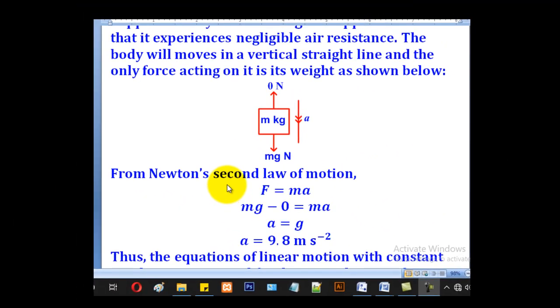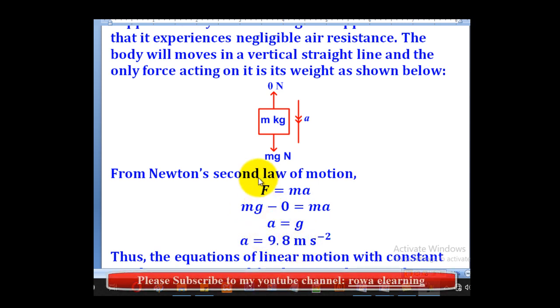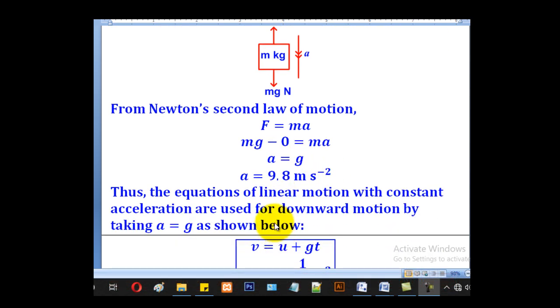From Newton's second law of motion, we know that F equals ma, where F is the resultant force in the direction of motion. In this case, the resultant force will be mg minus 0, which equals ma. When we substitute, this m can cancel, we remain with a equal to g. But our g is 9.8, so the acceleration used for vertical motion under gravity when a body is freely falling will be 9.8 m per second squared. In other words, a will be positive g.